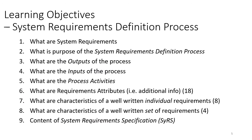The learning objectives for this section are: what are System Requirements? Items 1 through 5 answer questions about what is the purpose of the process, what are the outputs and inputs of the process, and what are the activities executed in the System Requirements Definition Process. Item number 6 covers information about the attributes of requirements — there are 18 of those. Items 7 and 8 cover characteristics of a well-written individual and set of requirements. Learning objective 9 is the content of the System Requirements Specification.